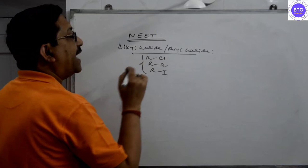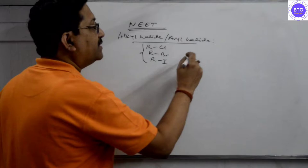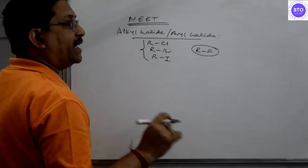This is alkyl halide. Mainly there is presence of Cl, Br with the alkyl group, but RI is not found regularly in the open atmosphere.